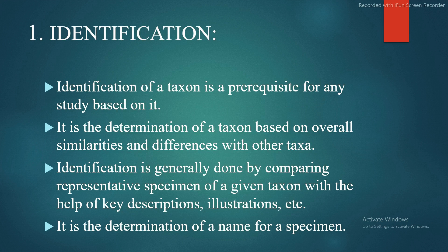First, identification. Identification of a taxon is a prerequisite for any study based on it. It is the determination of a taxon based on overall similarities and differences with other taxa. Identification is generally done by comparing representative specimens of a given taxon with the help of keys, descriptions, and illustrations. It is the determination of a name for a specimen.